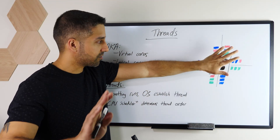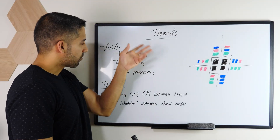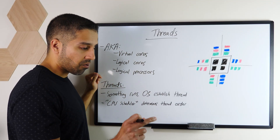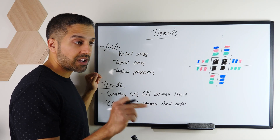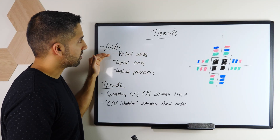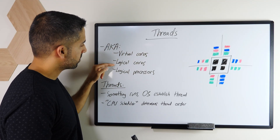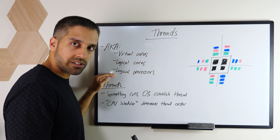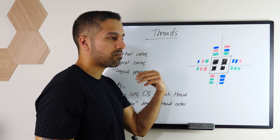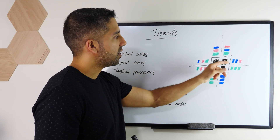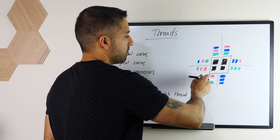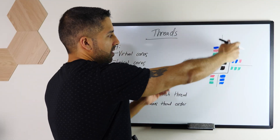Threads are also known by a couple of naming conventions. Cores are physically within the CPU; threads are not — they're more logical, like a software type. They're also known as virtual cores, logical cores, and logical processors, but 'threads' is the main term. What I'm denoting now is that previously there was one set of tasks per core; now you'll notice there are two sets of tasks per core, divided by black lines.